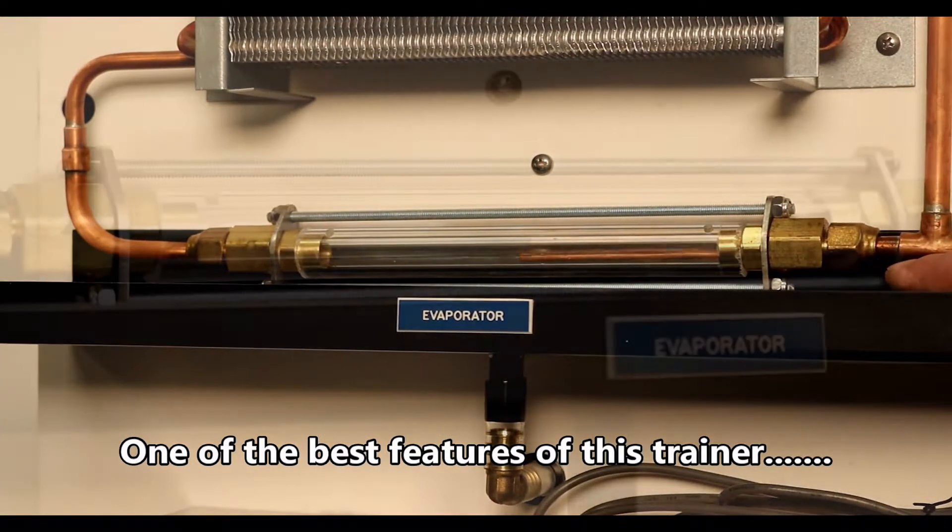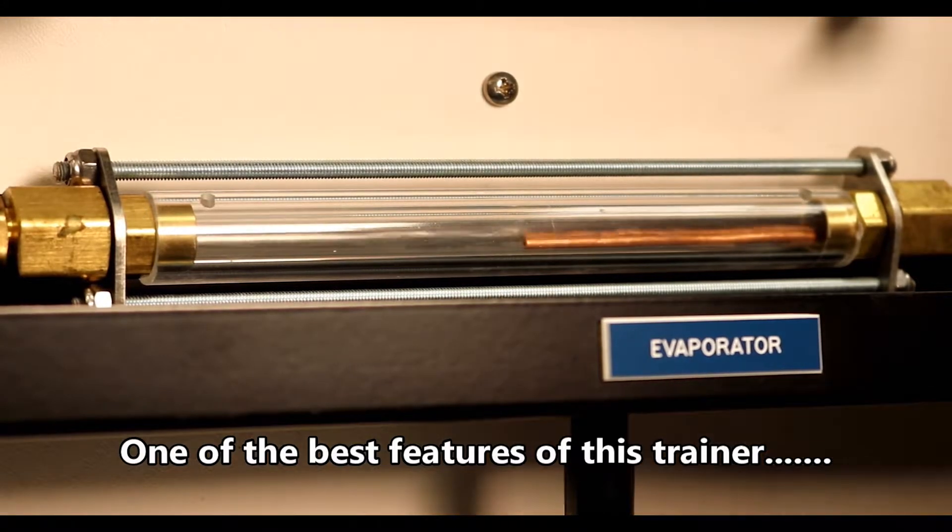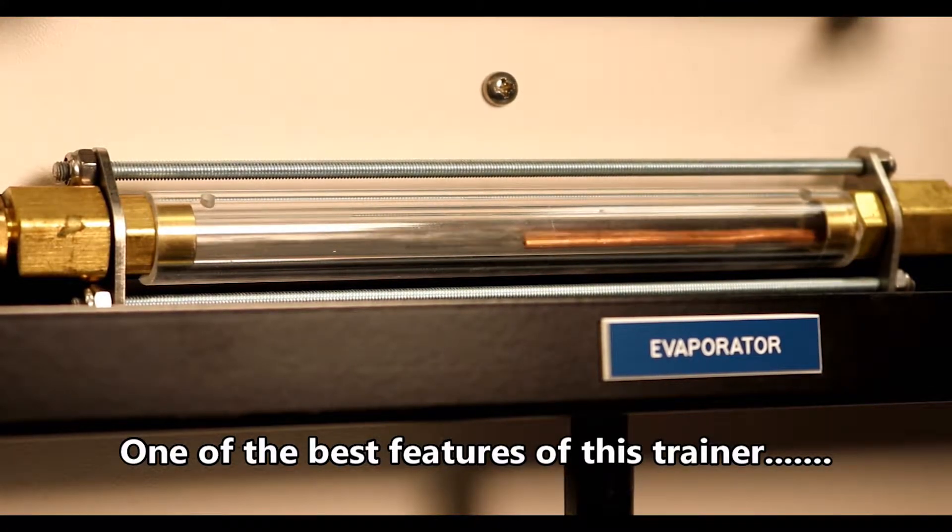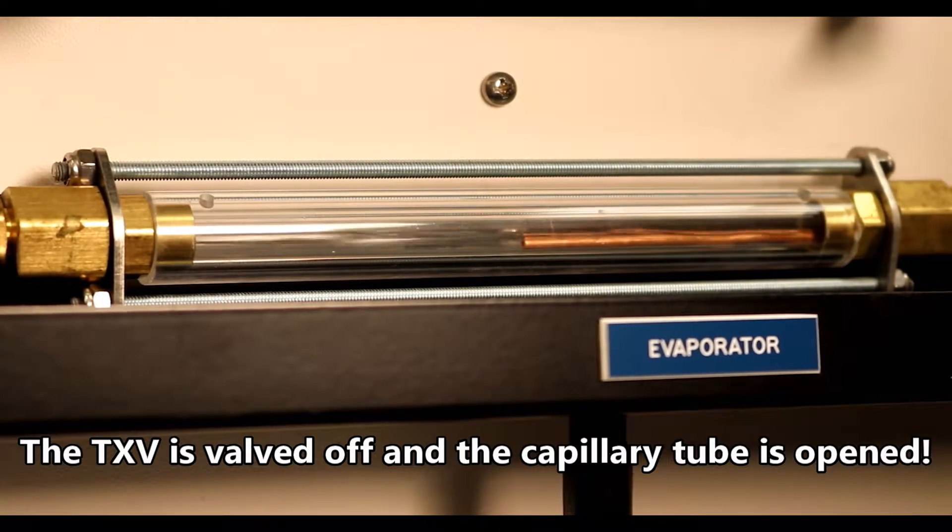The sight glasses located at the inlet and outlet of both the evaporator and condenser are made of explosion-proof, tie-bolt designed glass. They allow the phases of the refrigerant and oil to be observed during various modes of operation.